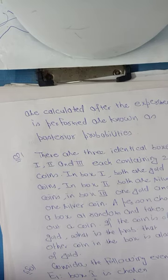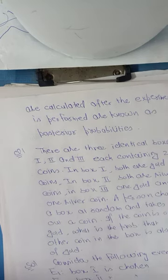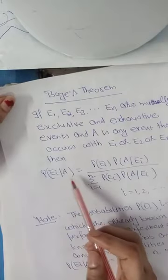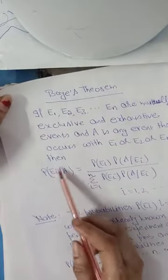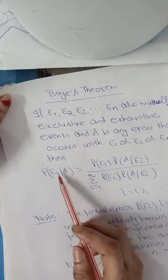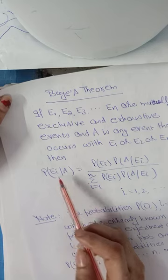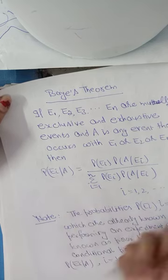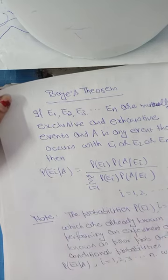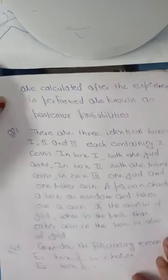So the basic formula you have to learn is: probability of Ei given A. The value of i depends on the number of events — whether we have two events, three, or a maximum of four events. Now we will solve questions based on this.